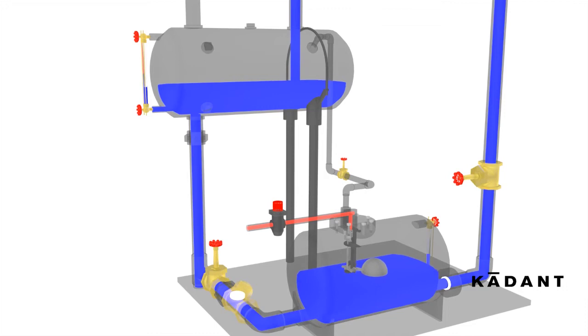When the condensate reaches the lower level, the float mechanism resets. Residual motive pressure flows into the receiver. Once the pump tank and receiver pressures equalize, the cycle will repeat.